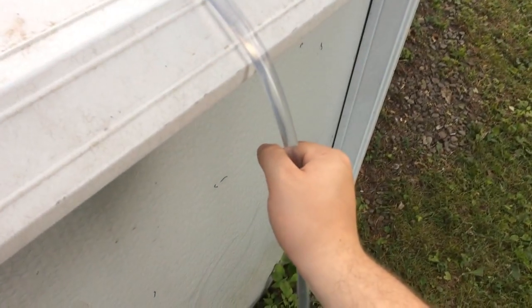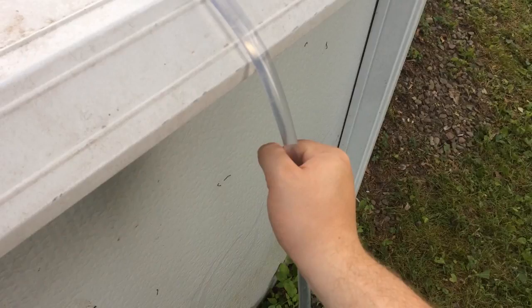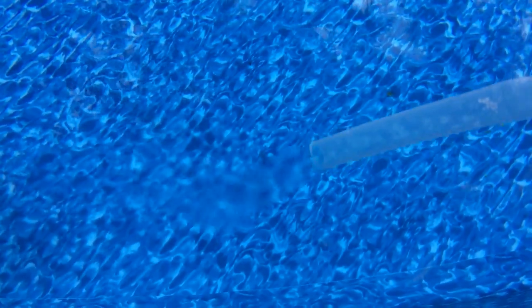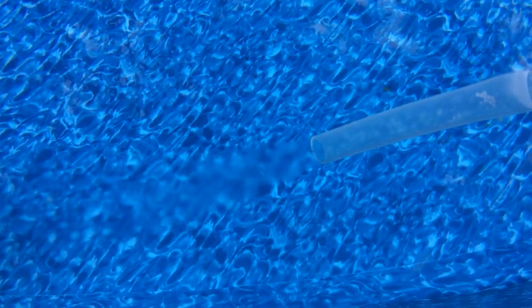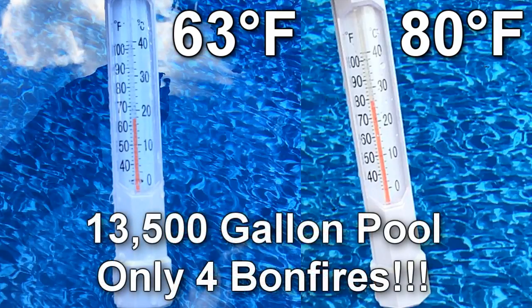After a while you'll be able to touch the hose and notice that it's pretty hot and if you look at the water inside the pool you can see that there's piping hot water coming out of the tube. I would say the water in my pool was between 120 and 160 degrees. I was able to heat my pool from 63 to 80 degrees Fahrenheit after only four bonfires and I have a pretty large pool at 13,500 gallons.